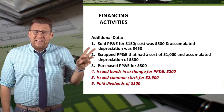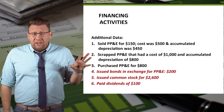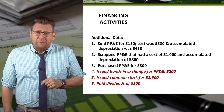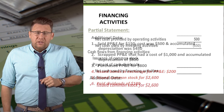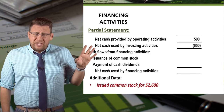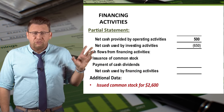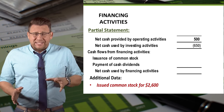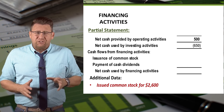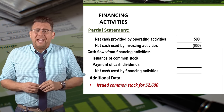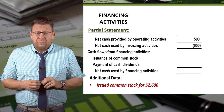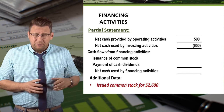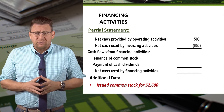The items highlighted in red are those related to long-term liabilities and equity. A partial statement of cash flows is shown here, with the financing activities section displayed directly after the investing activities section. I've identified a couple of items that will go into this section.